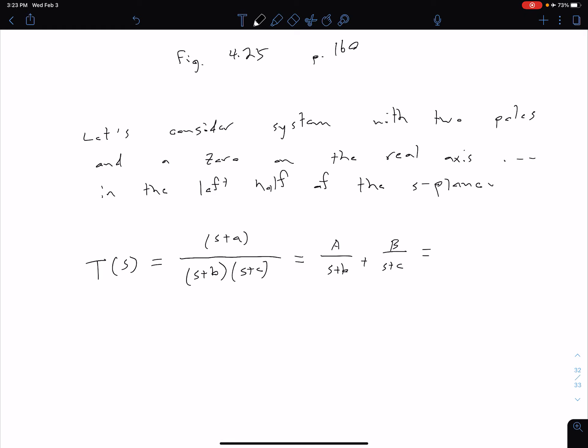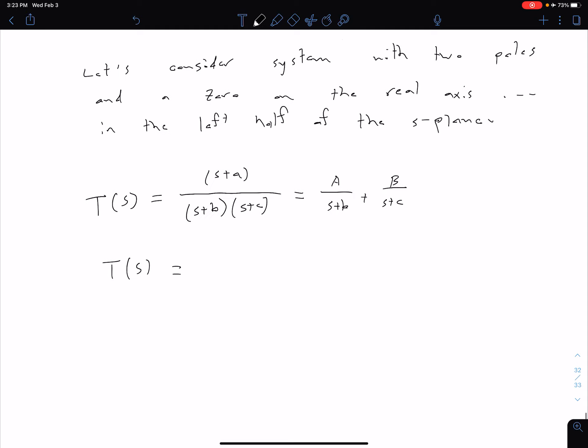So we can go ahead and solve that out. And what we get is, let me actually do this down here on this next line so I have plenty of space. So we have something over our s plus B and something over our s plus C. So it turns out that that capital A term becomes negative B plus A divided by negative B plus C. And our capital B term becomes negative C plus A divided by negative C plus B.